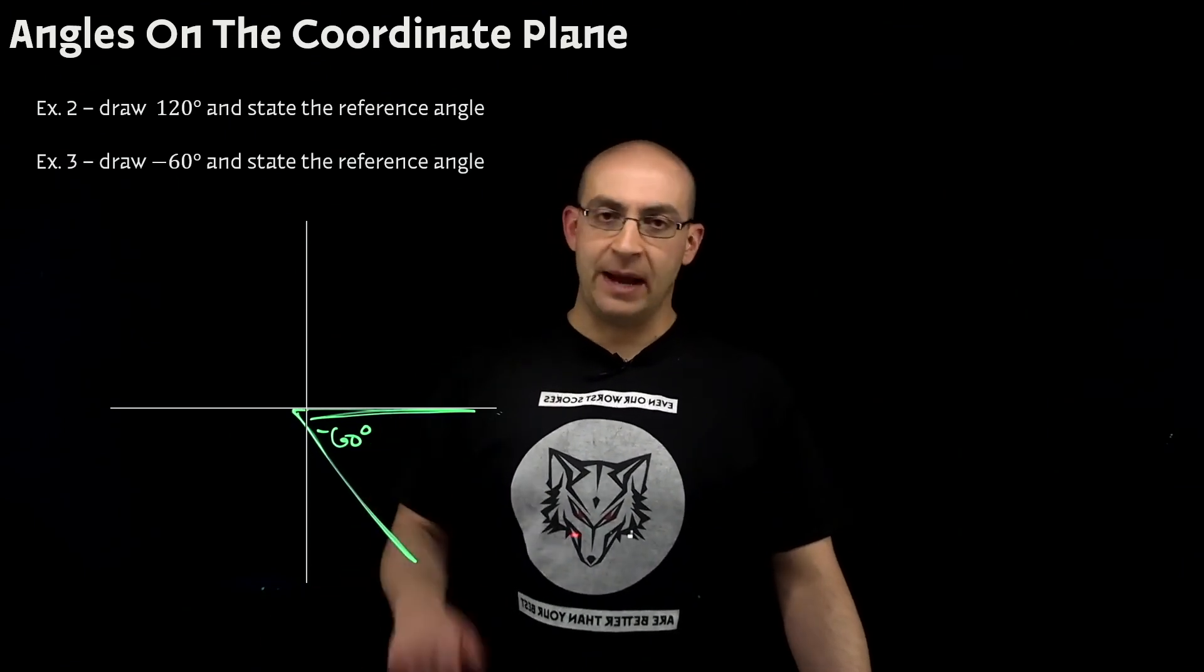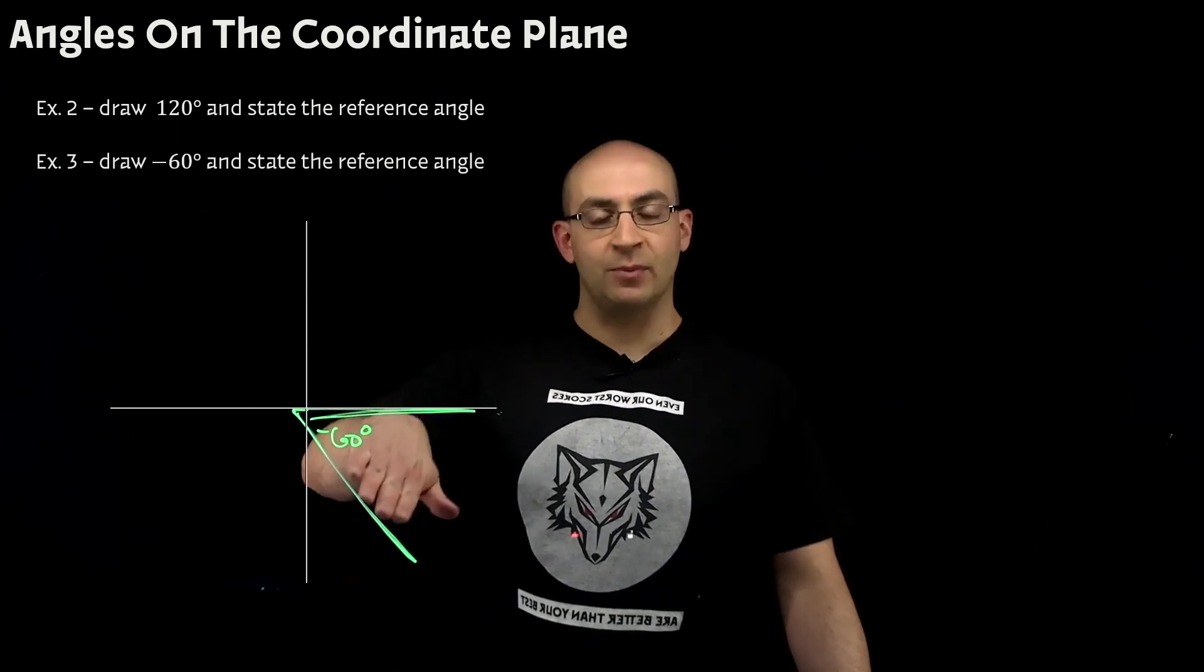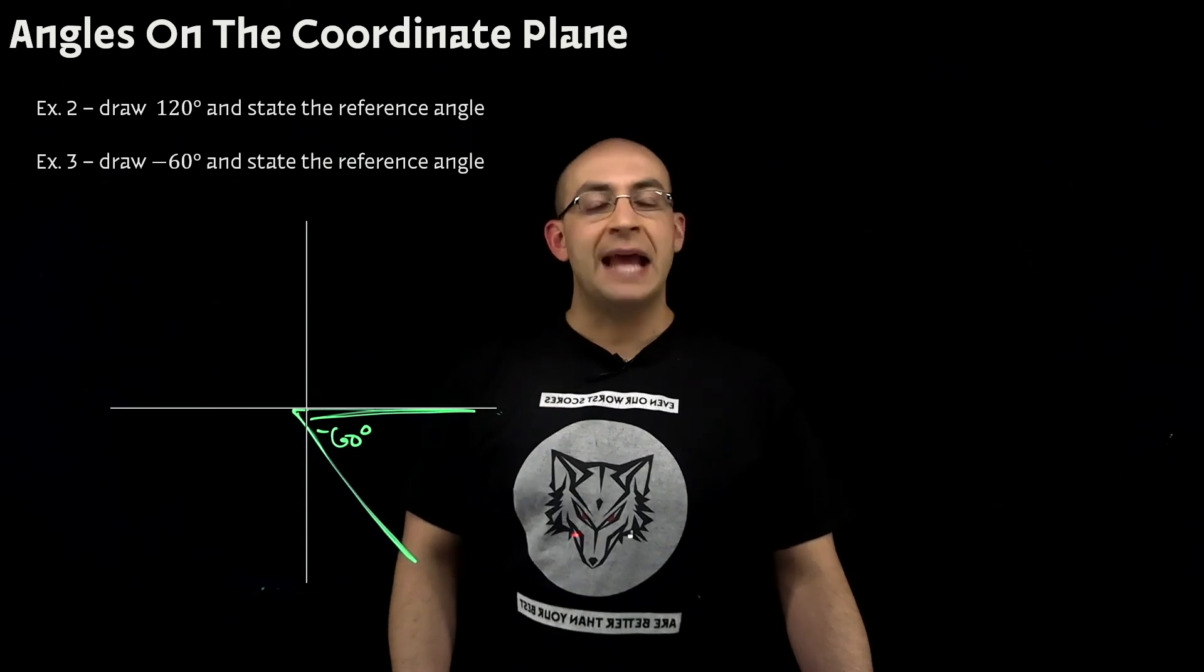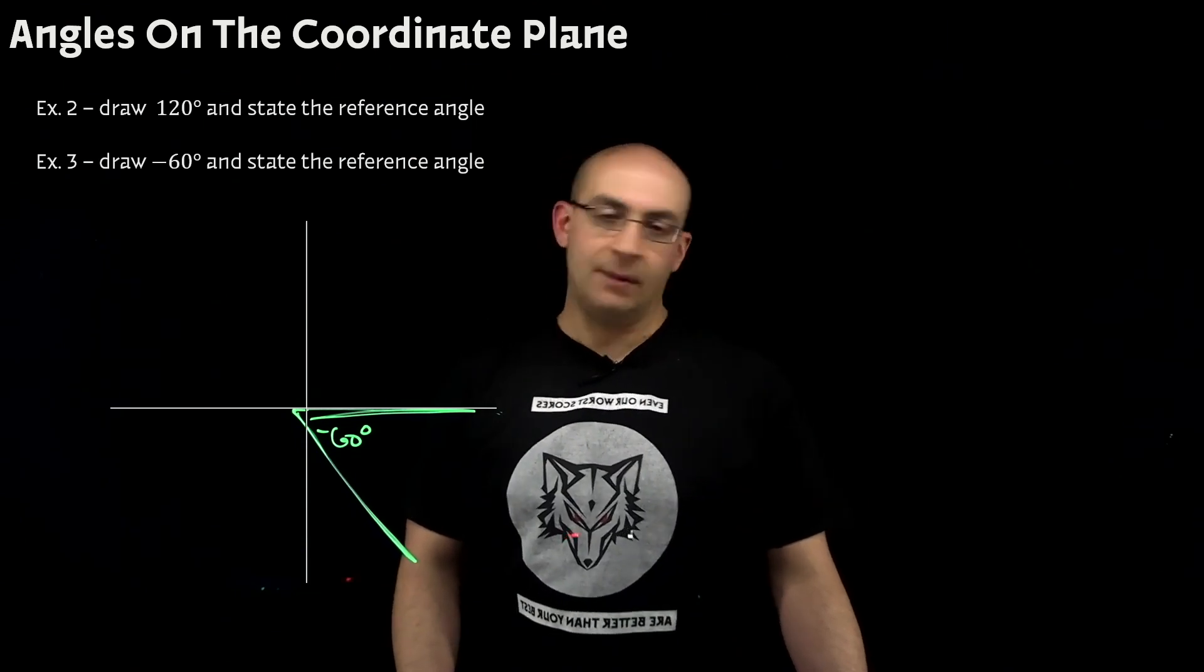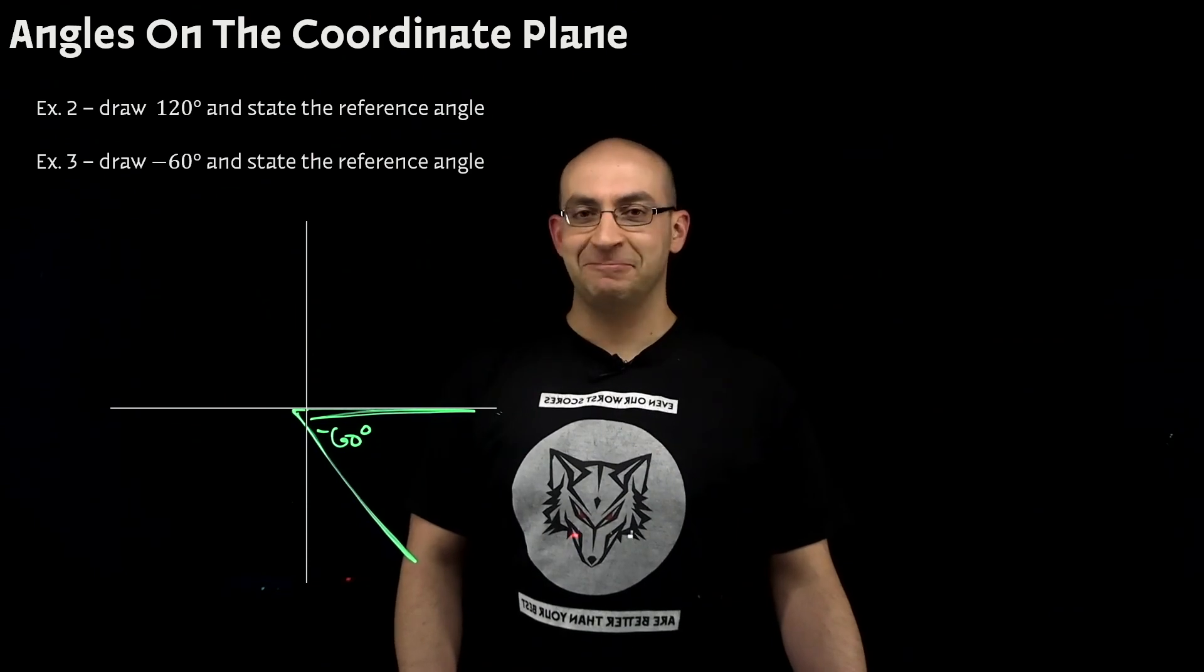Certainly not intended, but I'm glad we did it. The reference angle to negative 60 is 60. Because number 1, it has to be an acute angle. And number 2, it has to be the difference between wherever my terminal angle is or my terminal point is and its initial. It just so happens to be the same value. Now, normally, will you see this? No. You probably will never see this. But I'm glad I did it because it got you to think a little bit.